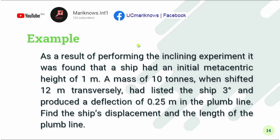The next example is the task given to you — to calculate a given example of the inclining experiment in our module. But first, let us discuss this example: as a result of performing the inclining experiment, it was found that the ship had an initial metacentric height of 1 meter. A mass of 10 tons when shifted 12 meters transversely had listed the ship 3 degrees and produced a deflection of 0.25 meters in the plumb line. We are going to find the ship's displacement as well as the length of the plumb line.